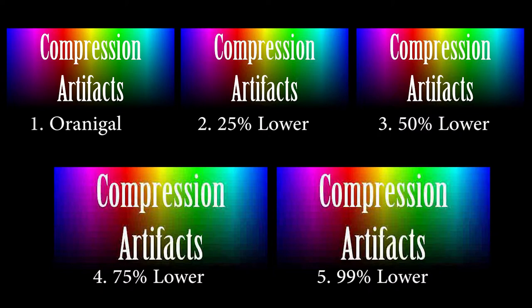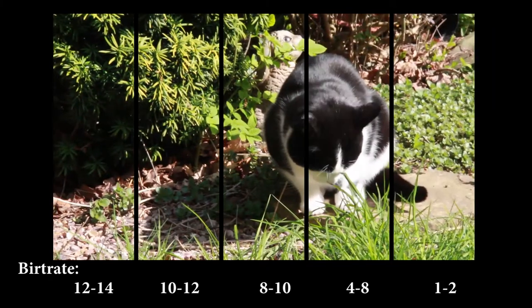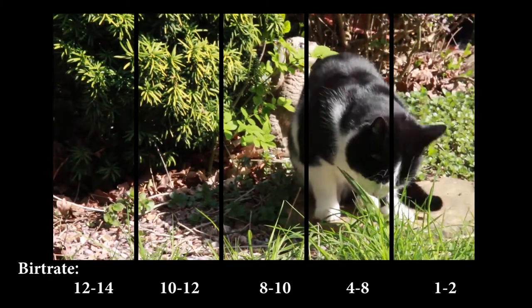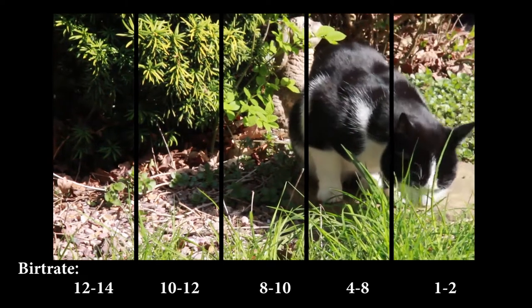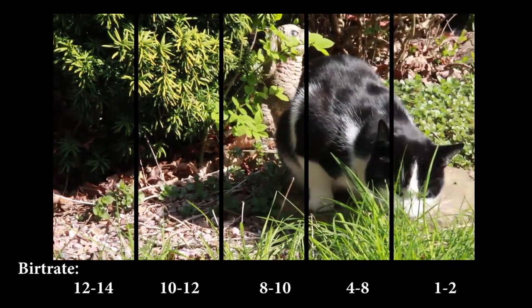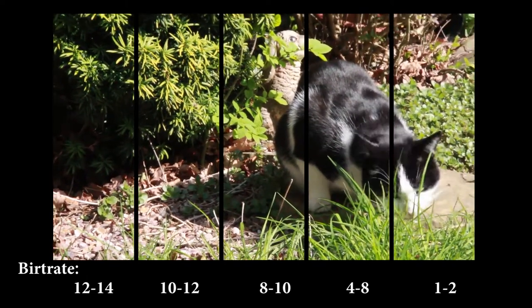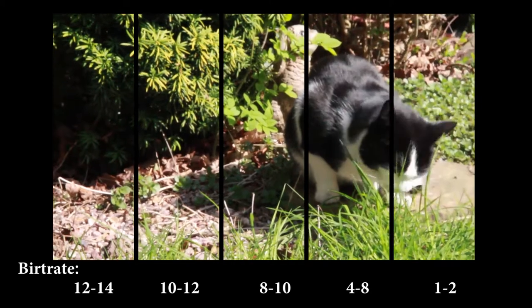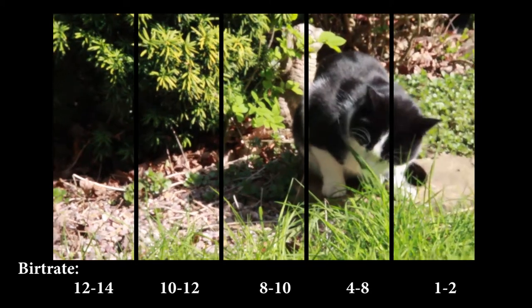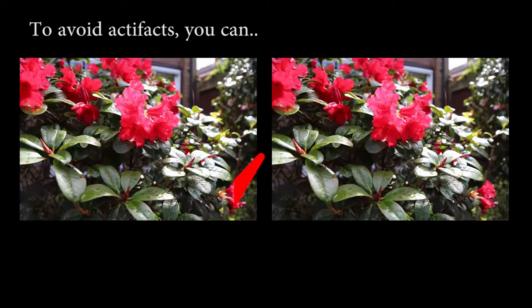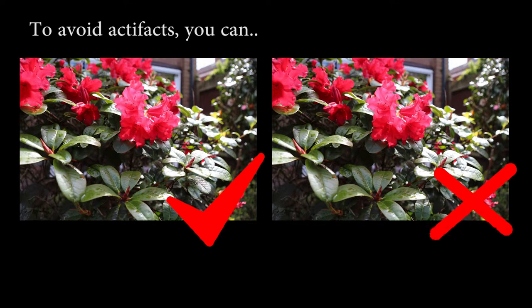Artifact also happens in video footage. Here are some H.264 MP4 videos and you can see that the cans on the right-hand side are less clear than those on the left. Compression artifact is quite clear when we are doing a comparison.